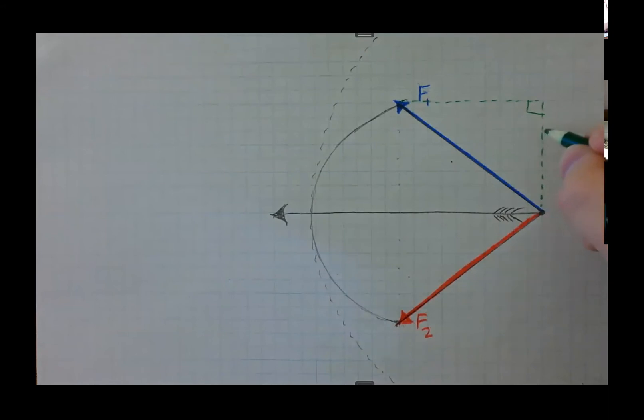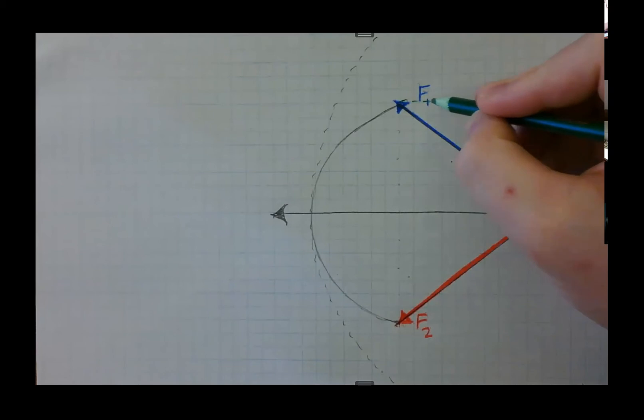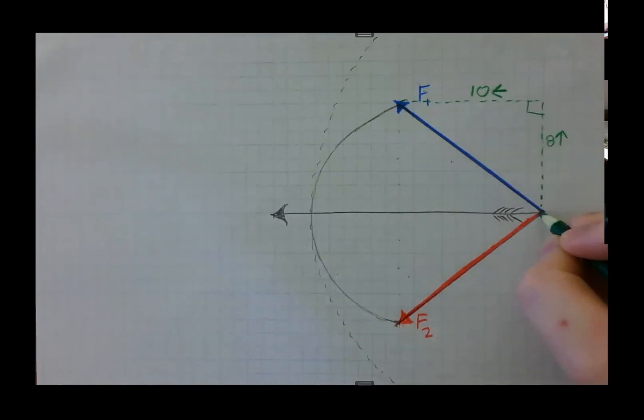One, two, three, four, five, six, seven, eight. So I'm going to write eight. Okay. And then what about to the left? It goes one, two, three, four, five, six, seven, eight, nine, 10. 10 to the left. And this is actually symmetrical. So we know that force two is eight down and 10 left.